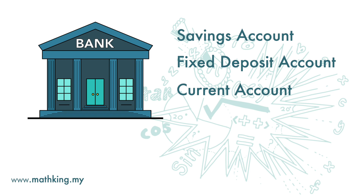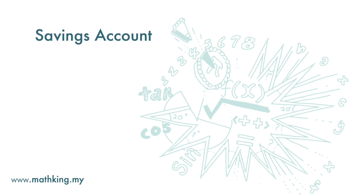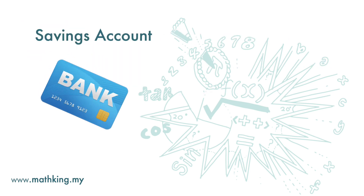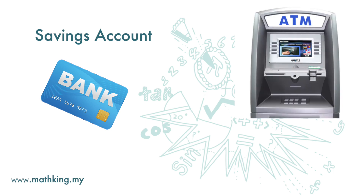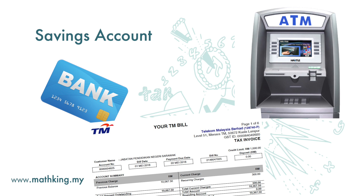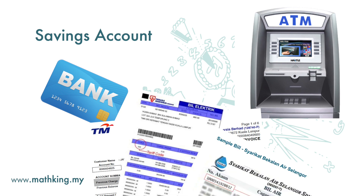In a savings account, you are often given an ATM card where you can get money easily from an ATM machine. You can also make payments for telephone bills, electricity bills, and many more, either online or through ATM machines. Usually, a savings account offers interest for the money deposited, but the interest is usually rather low.